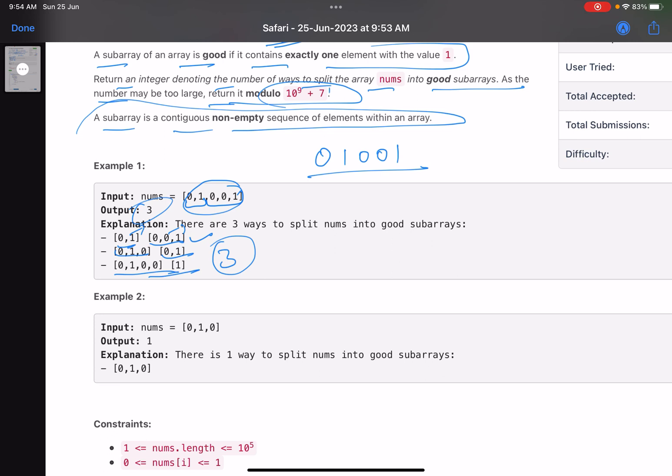Obviously, if the answer is large, you have to take modulo with 10^9 plus 7. What about this example? Since you have only a 1, you cannot split it and hence you return the original array itself. That is the only subarray that you can have. No other split possible.